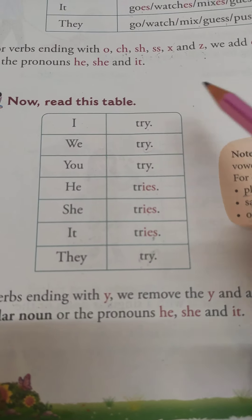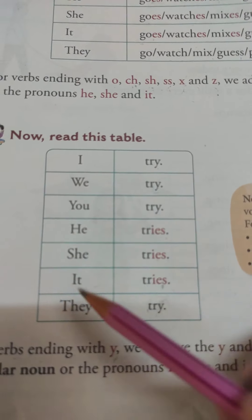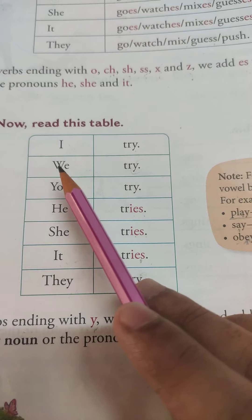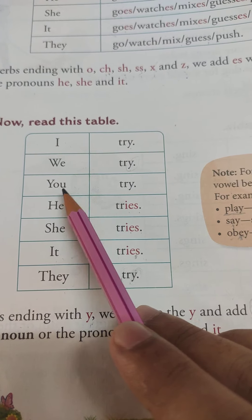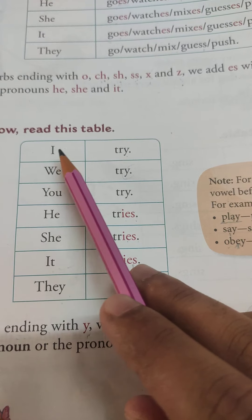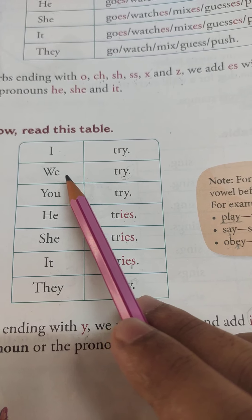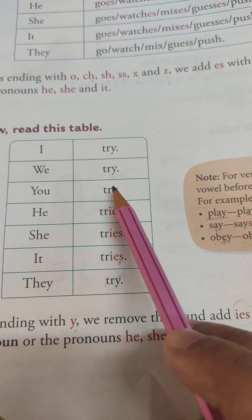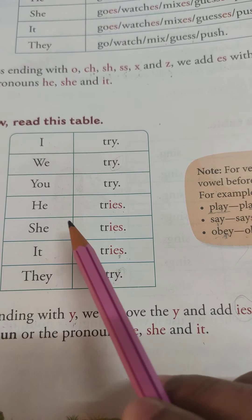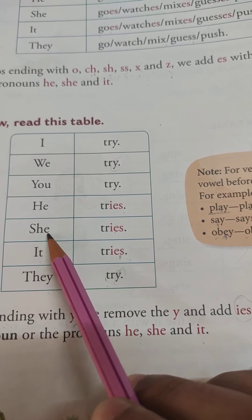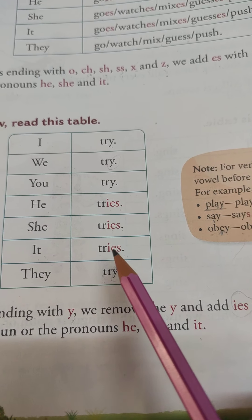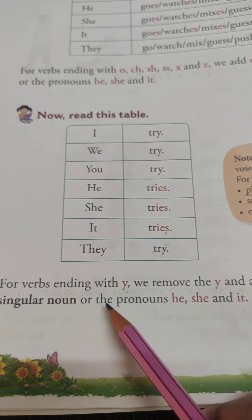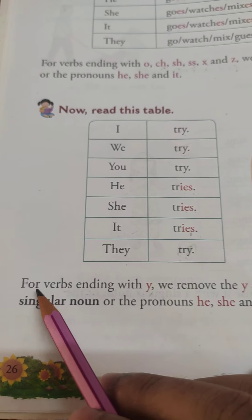Lastly, we learned this table: I try, we try, you try. But he tries, she tries, it tries. And they try.